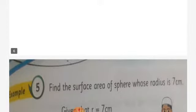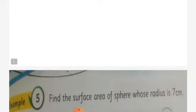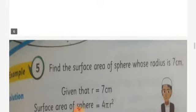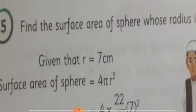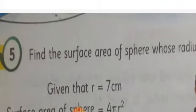Find the surface area of a sphere whose radius is 7 cm. We need to find the surface area where our radius is given as 7 cm. Now we need to find the surface area.